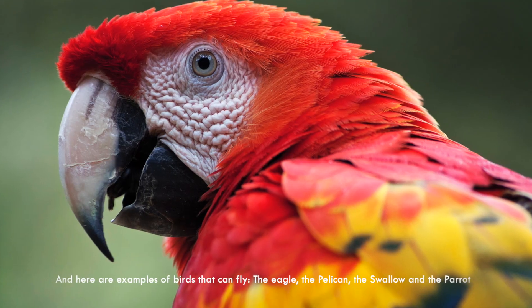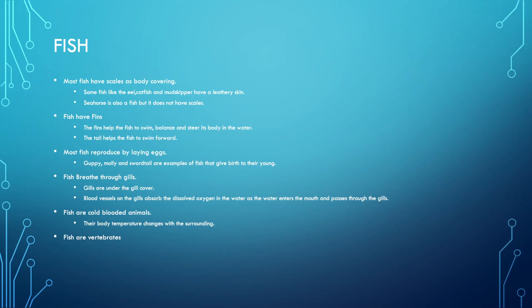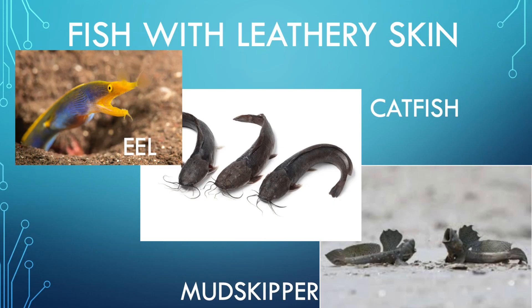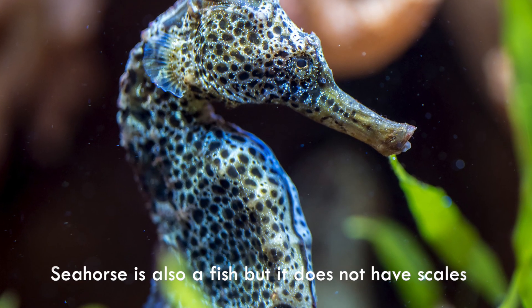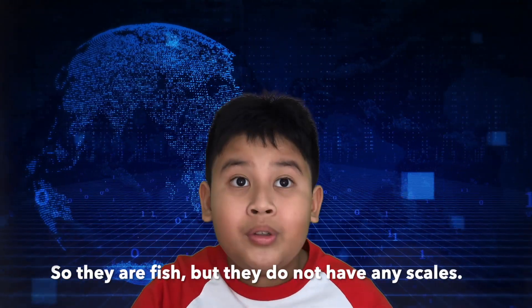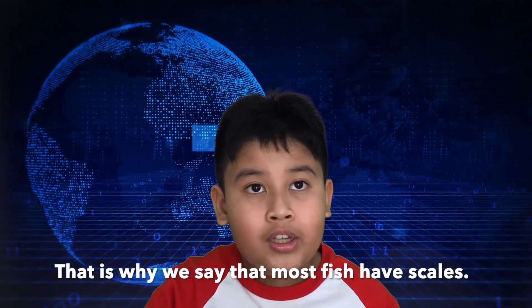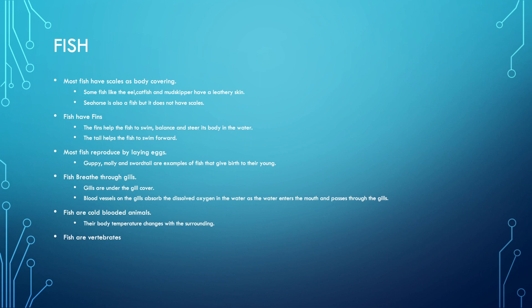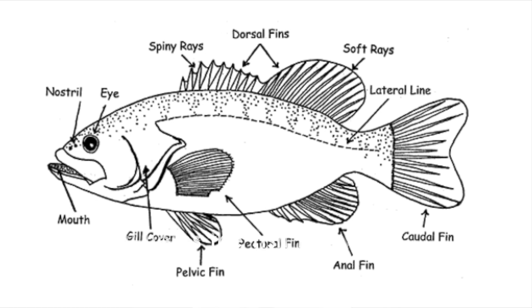Most fish have scales as their body covering. Some fish like the eel, catfish and mudskipper have leathery skin. Seahorses are also fish but they do not have scales — that's why we say most fish have scales. Fish have fins; the fins help the fish to swim, balance and steer its body in the water. The tail helps the fish to swim forward.